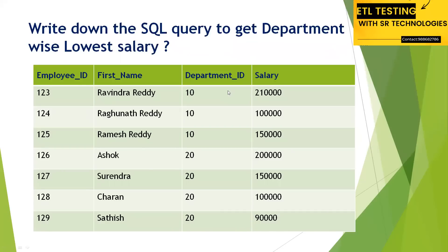If I ask you department-wise maximum salary, whenever you do GROUP BY department_id, it first considers department 10 — the first three records belong to department 10 and the maximum salary there is 10,000. Then for the last records (departments 106 to 109), the maximum salary is 2 lakh. Internally it takes pieces of the table as a window, picking the maximum value per window. Department 10 gives 2 lakh 10 thousand, department 20 gives 2 lakh as maximum salary.